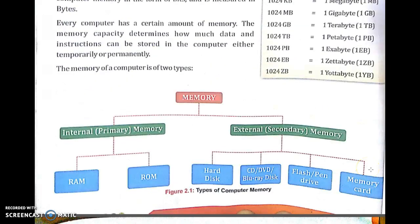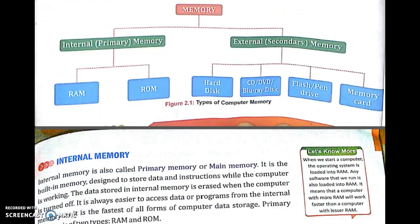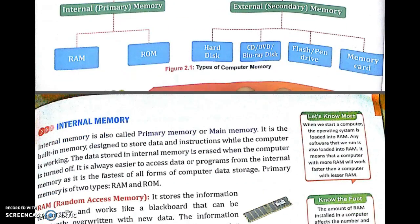Memory is of two types: internal memory, which is primary, and external memory, which is secondary. Primary memory consists of RAM and ROM. Secondary memory includes hard disk, CD, DVD, flash drive, and memory card.